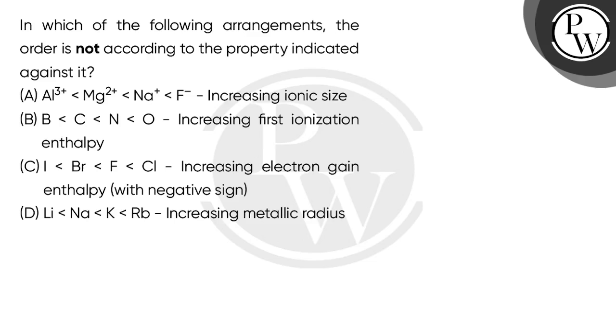Hello students, let's see this question. The question says in which of the following arrangements the order is not according to the property indicated against it. So there are 4 options. You have given a few orders here, increasing orders, and you need to tell which order is not going to correlate with your property.